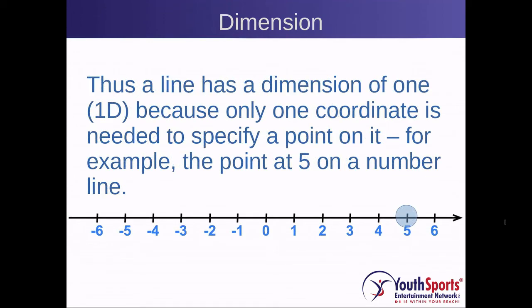Let's take the example of a number line. We have numbers on the number line and, for example, the number five. We just need one point on the number line to define its location. That is why a line is called a one-dimensional object.